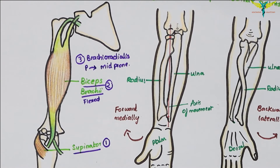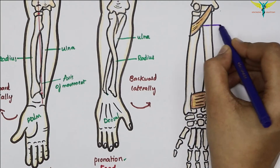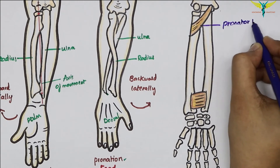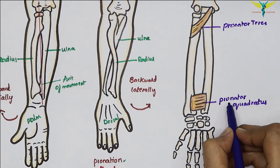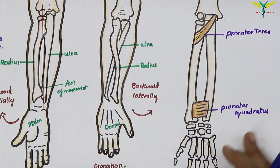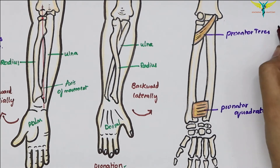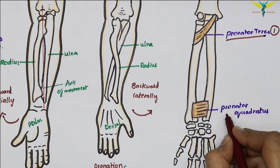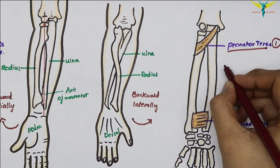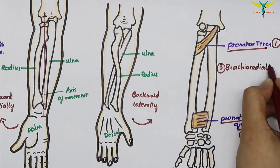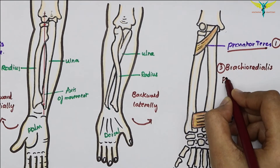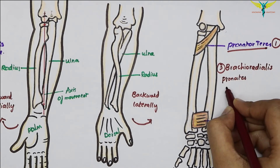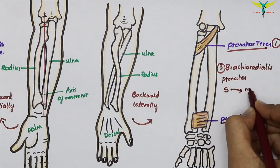Now the muscles involved in pronation. In this diagram, this muscle is the pronator teres and this is the pronator quadratus. As the muscle names indicate, their action is pronation. The muscles helpful in pronation are the pronator teres, the pronator quadratus, and the brachioradialis, which pronates the supinated forearm to the mid-prone position.